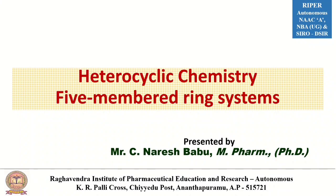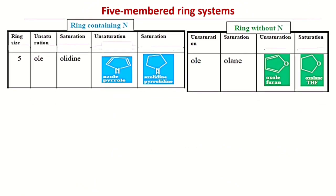Welcome to this video on heterocyclic chemistry of five-membered ring systems. The five-membered ring systems may contain hetero atoms such as nitrogen, oxygen, or sulfur, or may exist without a nitrogen atom as the hetero atom.